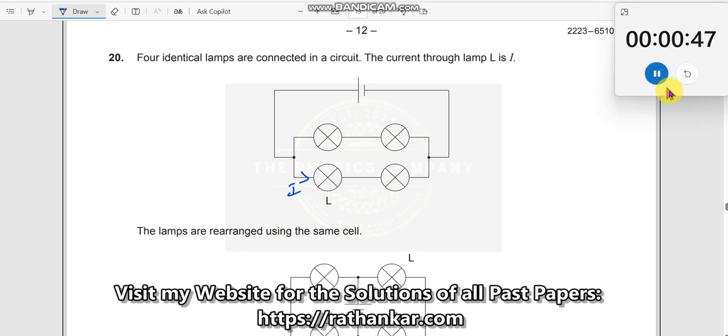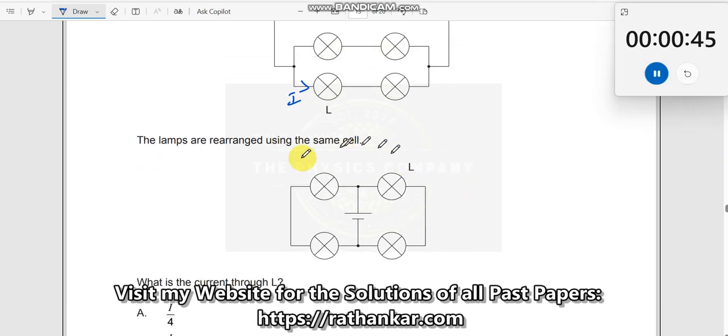The lamps are rearranged using the same cell. It's like this over here. What is the current through L? This is what the question is.